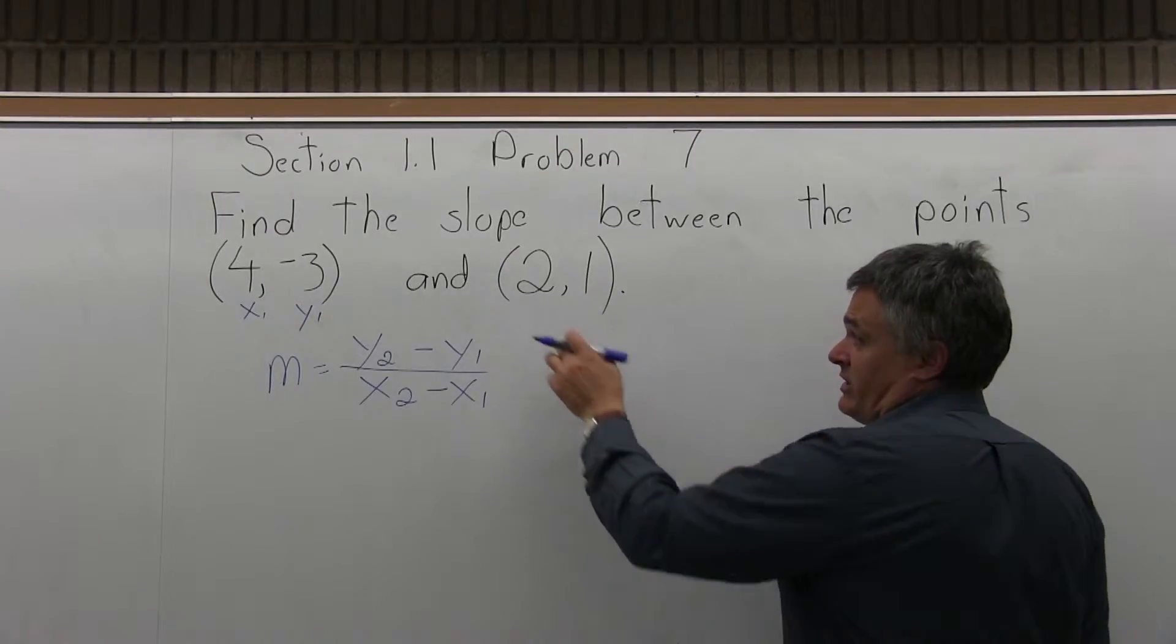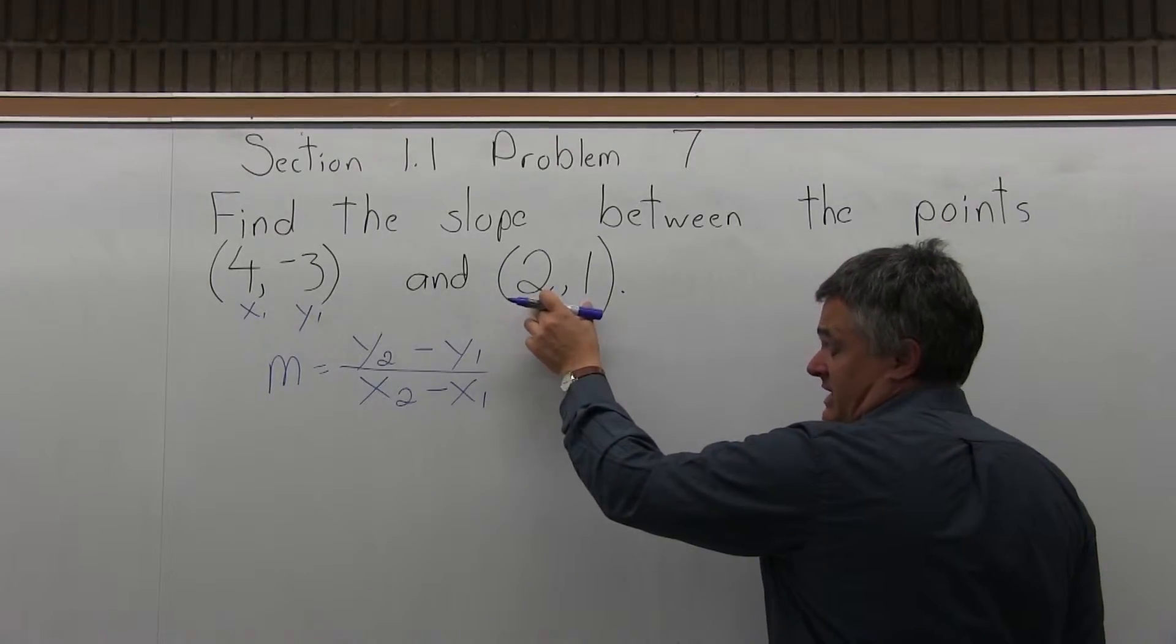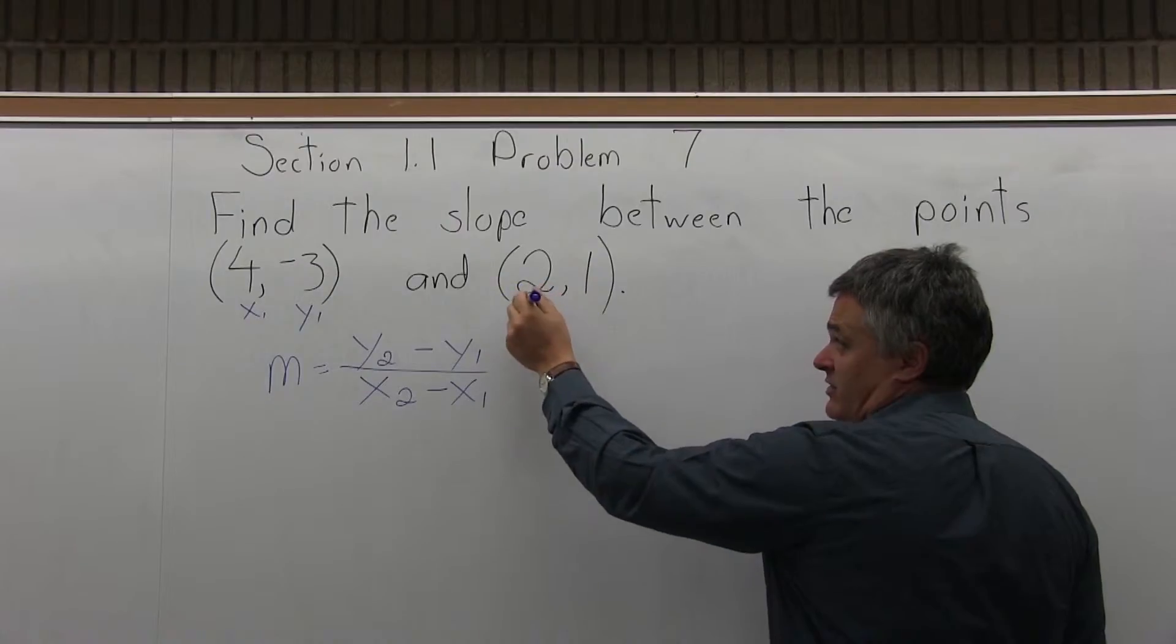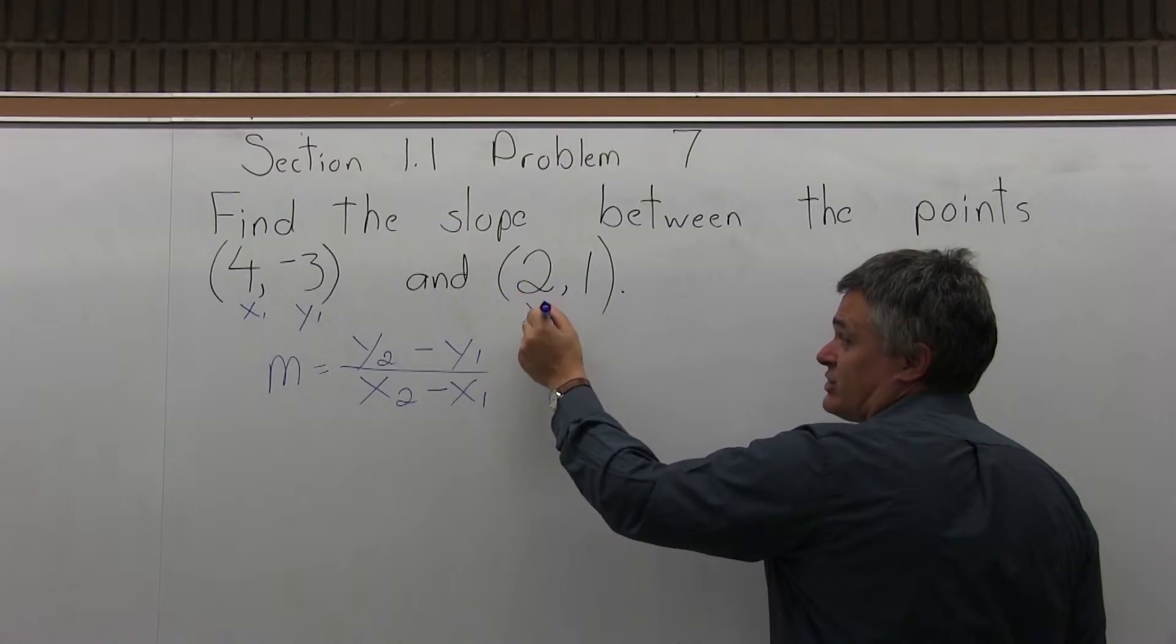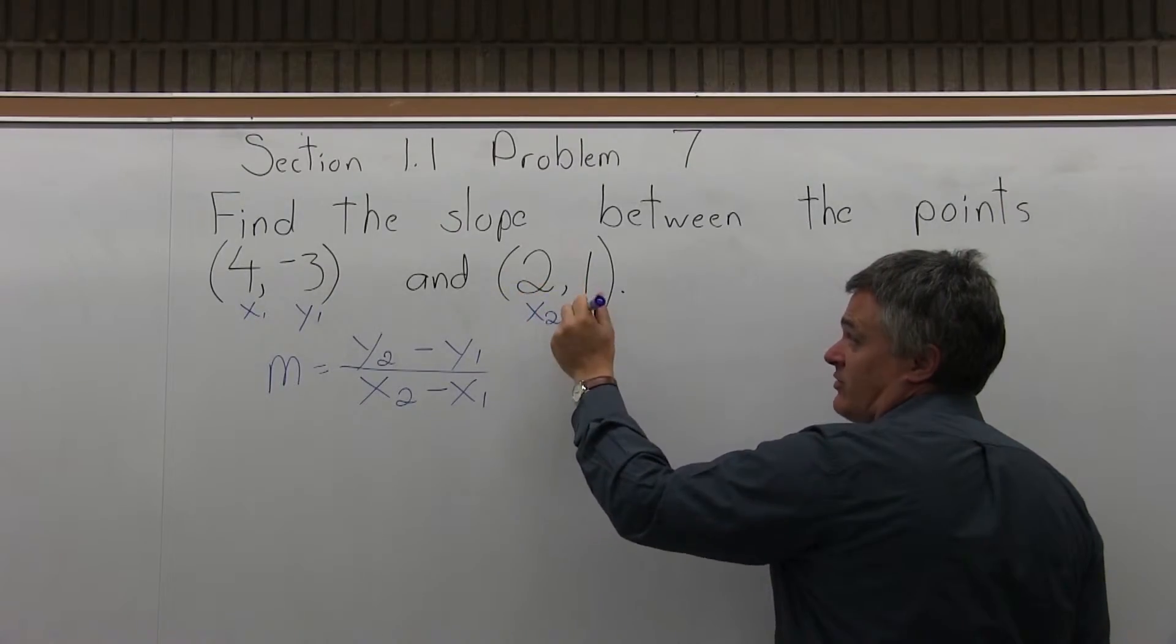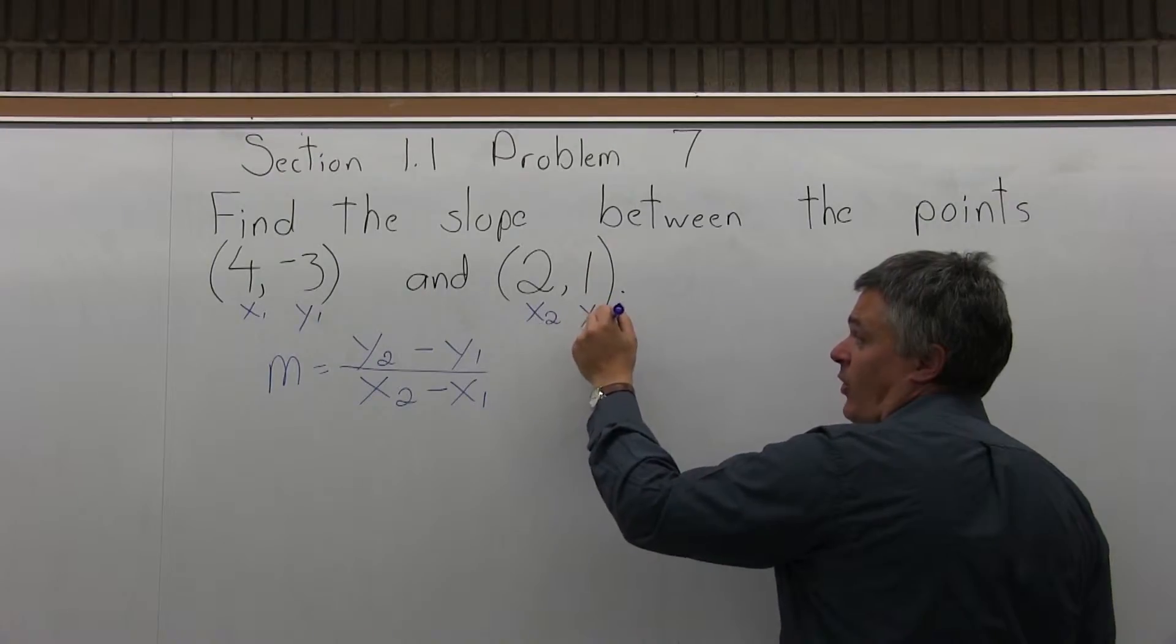And the second point, (2, 1), it's given second, I consider it to be point 2. So its x value of 2, I will label as x2. And its y value of 1, I will label to be y2.